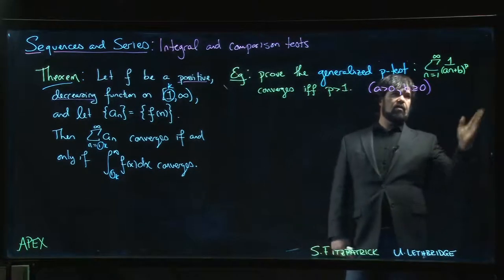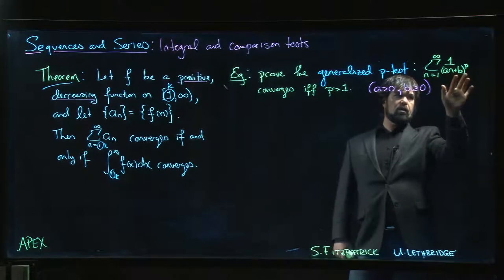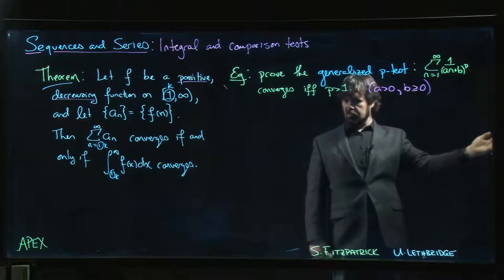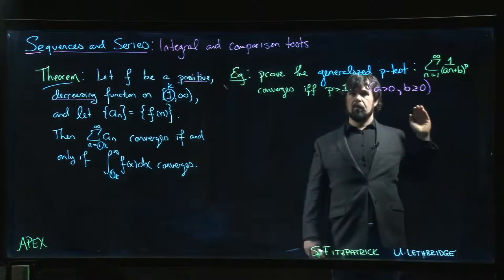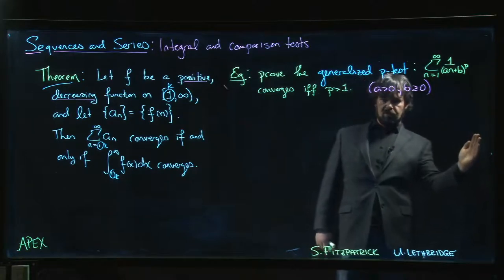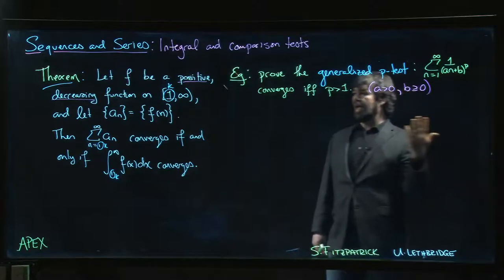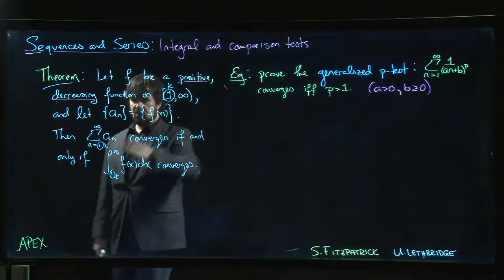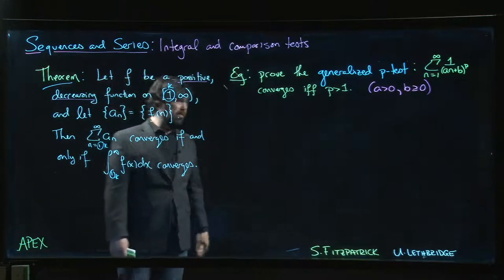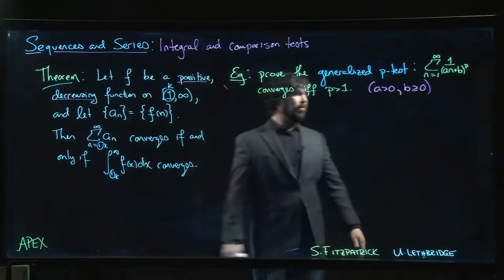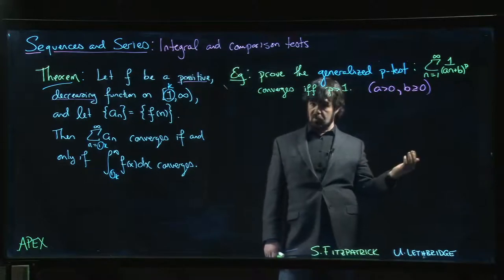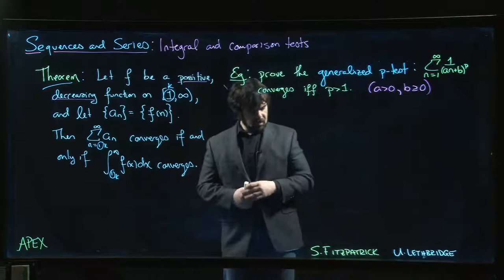If that vertical asymptote occurs somewhere between, let's say n equals 5 and n equals 6, we won't have a positive decreasing function until we cross the vertical asymptote. We can handle that—we just modify things. A finite number of terms doesn't affect convergence; we can always start at some other value. But just to keep life simple, assume that b is bigger than or equal to zero so we don't have to worry about an asymptote, at least for positive values of n.